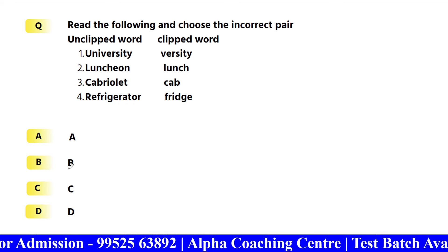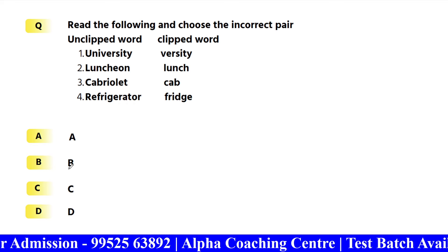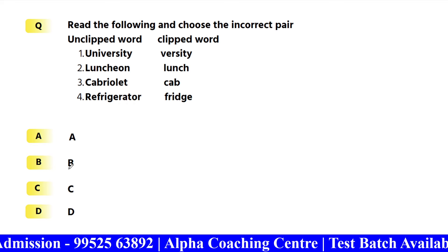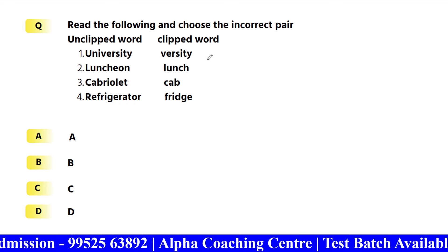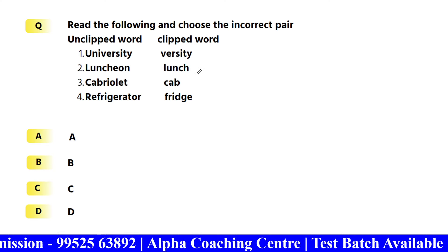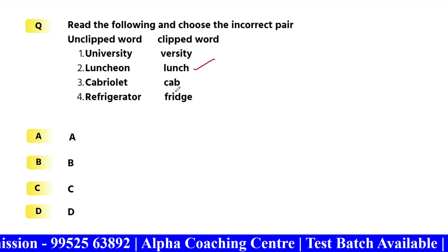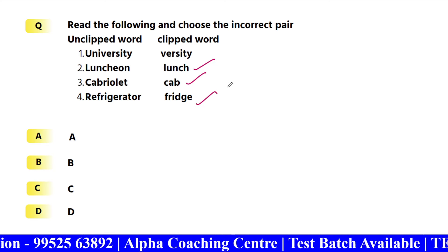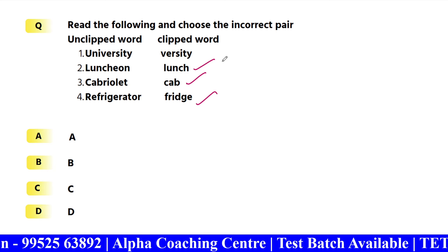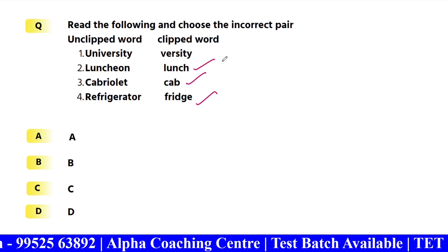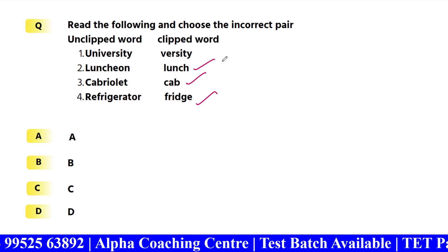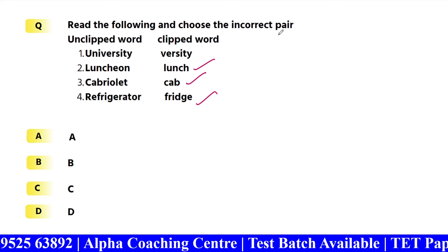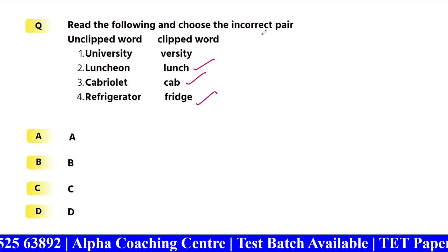Next: Clipped words. University → varsity, luncheon → lunch, cabriolet → cab, refrigerator → fridge. This is the full word and clipped form. Convenience → con, advertisement → ad. Microphone → mic. These are clipped words.